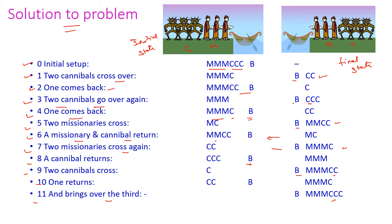In all cases, missionaries must be greater than or equal to cannibals on both sides. With this condition we cross all missionaries and cannibals to the other side of the river. We took 11 moves to cross everyone safely. So up to this we have seen the most popular missionaries and cannibals problem. In the next class I will come with another important topic from artificial intelligence. If you have any doubts, text me in the comment box, and you can give suggestions there too. Thank you.